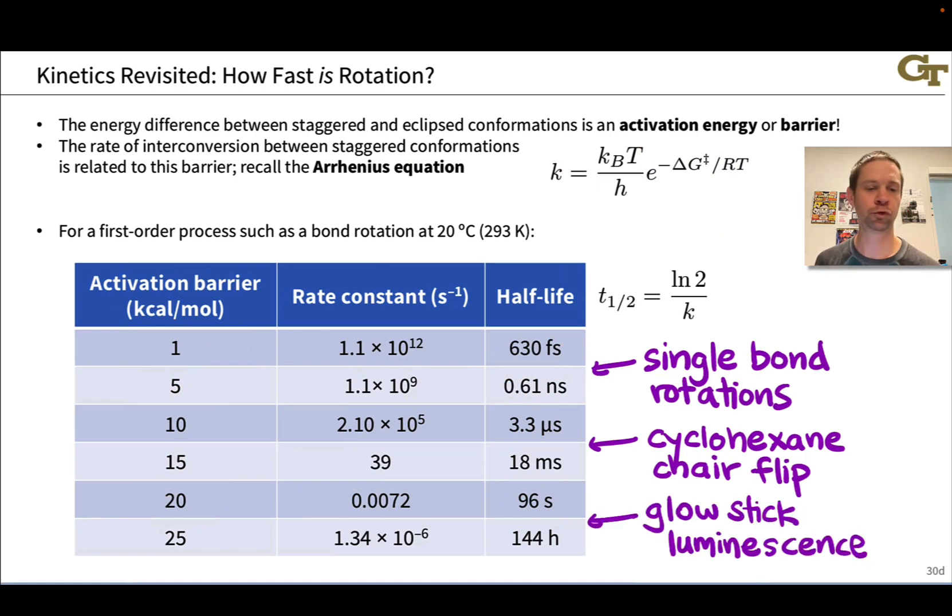Beyond that, we've got chemical reactivity. So something like 20 kilocalories per mole or 25 kilocalories per mole is a typical activation barrier for a chemical reaction. And something like glow stick luminescence is a nice visual indicator of this. How long does a glow stick last? Or how long does it take for a glow stick to go from its initial brightness to half its initial brightness? There, you're on the seconds to minutes scale where your activation barrier is between 20 and 25 kilocalories per mole.